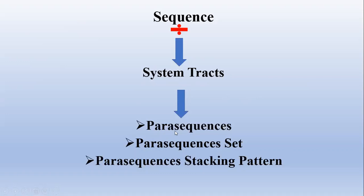Parasequences which develop within the same stage of sea-level are then grouped together in the form of parasequence sets, and these parasequence sets are then called system tracts.